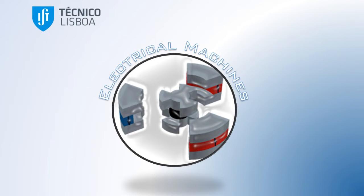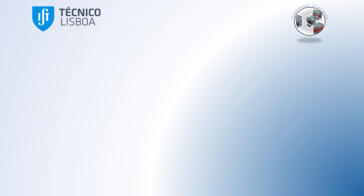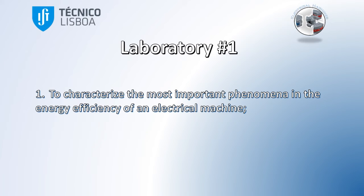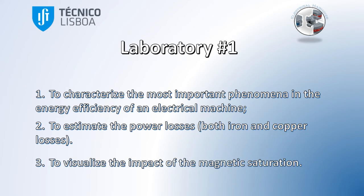Welcome to the electrical machines course. In this first laboratory the main objectives are to characterize the most important phenomenon in the energy efficiency of electrical machines, to estimate the power losses both iron and copper losses, and finally to visualize the impact of the magnetic saturation.